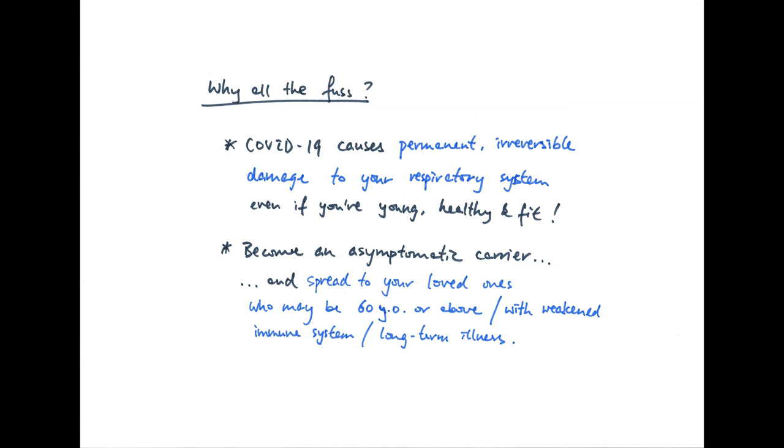Another massive problem is that you can become an asymptomatic carrier, meaning you won't get symptoms even after you've got the virus in you. You can then spread it to your loved ones who may be of older age, with a weakened immune system, or even long-term illness, which means that it will kill them instead of you.